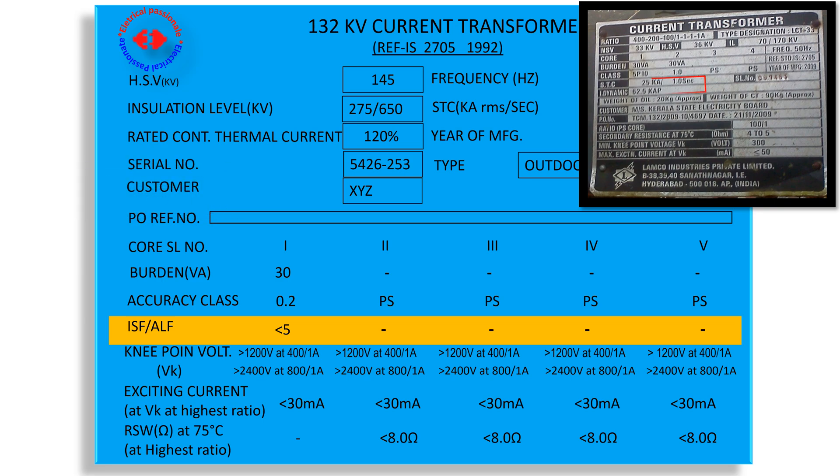Some nameplate carries dynamic current. Dynamic current means making current. It will be 2.5 times of short circuit current.